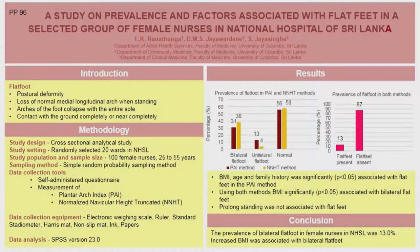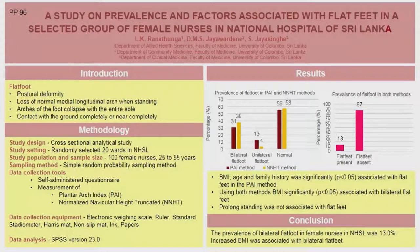The prevalence of flat foot condition in female nurses was calculated as a percentage of the study sample using frequencies in descriptive statistics, and a chi-square test was used to study the relationship between bilateral flat foot and the factors. The prevalence of bilateral flat foot by the PAI method was 31% and by the NNHT method was 38%. In both methods it was 13%. In the PAI method, BMI, age, and family history were significantly associated with bilateral flat foot. No factor was significant with flat feet in the NNHT method. Only BMI was significantly associated with those who had bilateral flat foot from both methods. This study found that the prevalence of bilateral flat foot in female nurses using NNHT was 13%, and increased BMI was associated with bilateral flat foot.